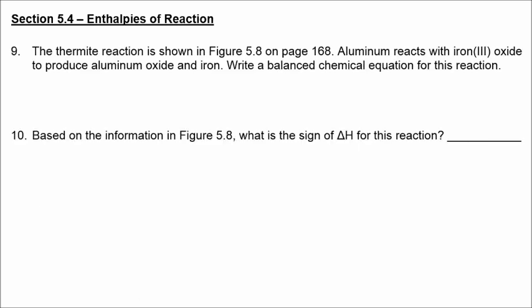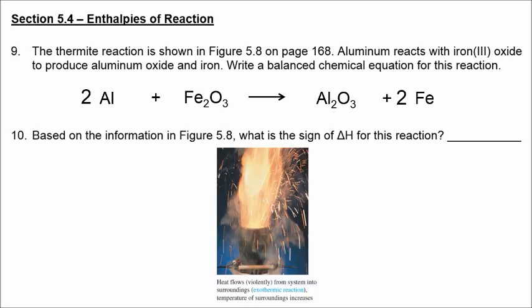In number nine, the thermite reaction involves aluminum reacting with iron(III) oxide to produce aluminum oxide and iron. We balance the equation by putting a two in front of aluminum and iron. The picture in the textbook clearly shows this is an exothermic reaction, so the sign of delta H is negative.